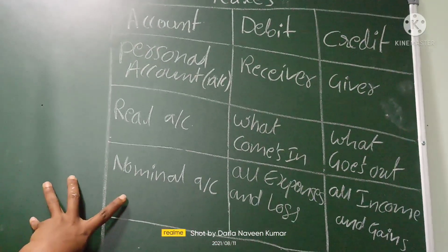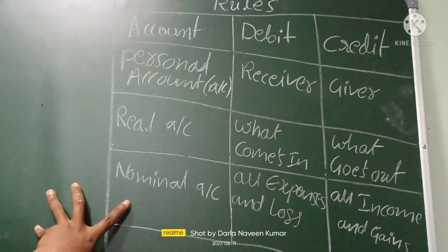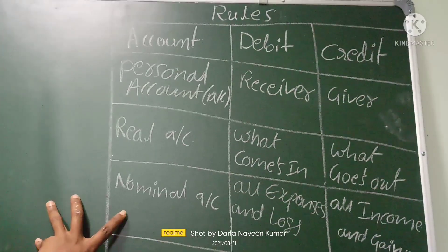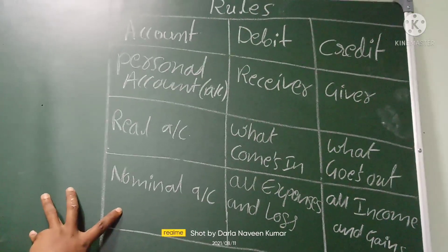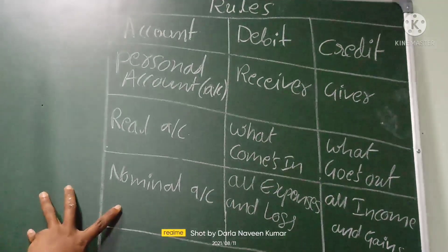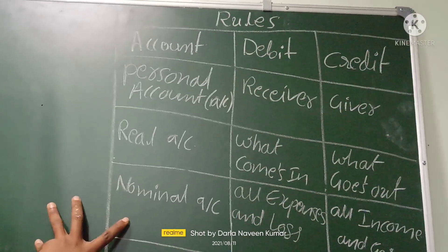Based on these debit and credit rules, we are going to record the transactions and write the journal entries.